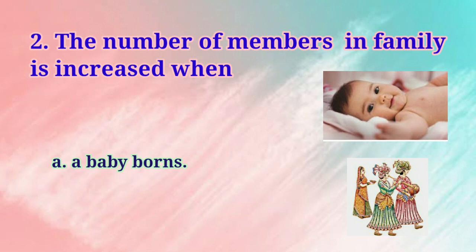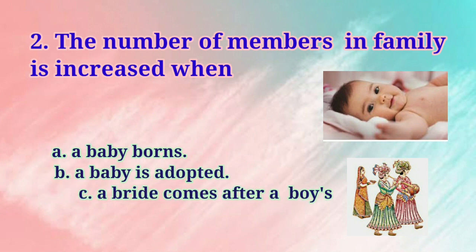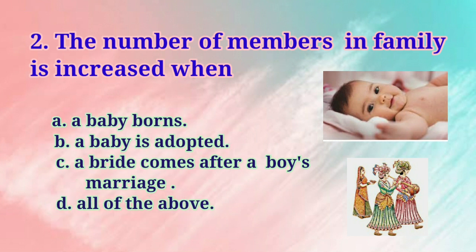Number 2: The number of members in a family is increased when — the options are: a baby is born, a baby is adopted, a bride comes after a boy's marriage, or all of the above. The right option is all of the above.